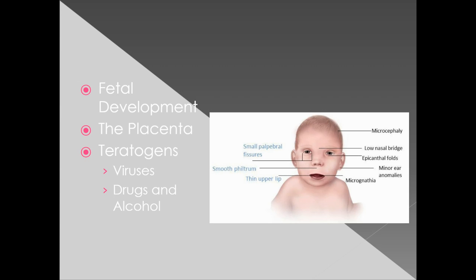The child can also be adversely affected through the placenta. The placenta works as a screener, but it doesn't screen everything. Negative things that can affect the child's development and get through are referred to as teratogens. Teratogens can include viruses — for example, a mother who develops the HIV virus during pregnancy can pass that on to the unborn child. It's specifically if she develops the infection during pregnancy that it can be transmitted.